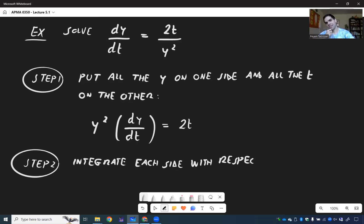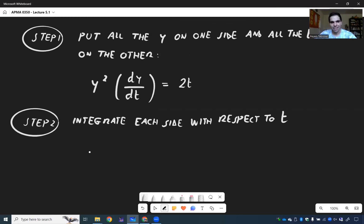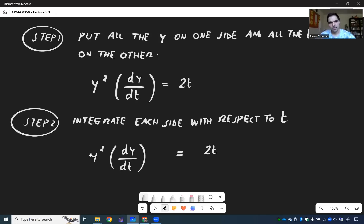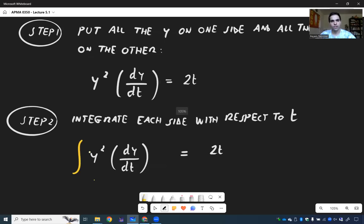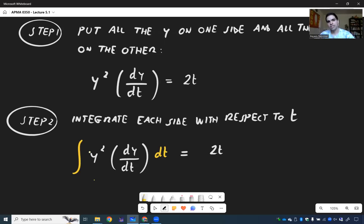With respect to t, as I like to say with disrespect to t. So again we have our y squared dy/dt, and then we have our 2t, and once again integral of this dt is integral of 2t dt.